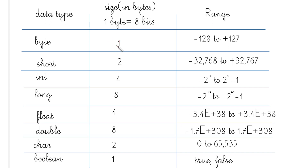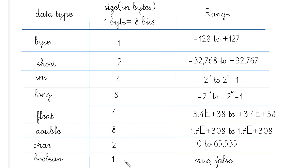The sizes in bytes are: byte occupies one byte, short occupies two bytes, int occupies four bytes, and long occupies eight bytes. Float takes four bytes, double eight bytes, char two bytes, and a boolean variable takes one byte in memory.